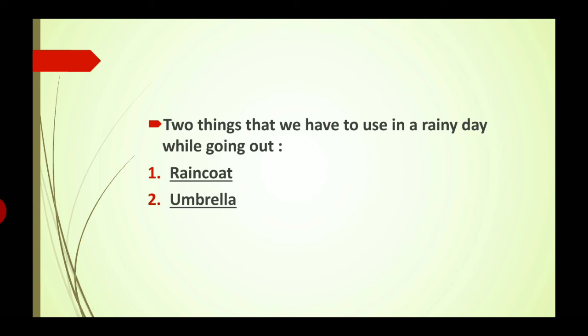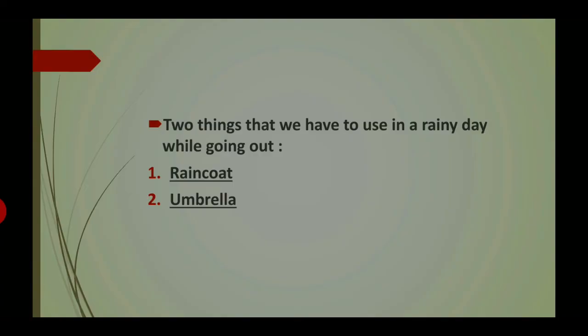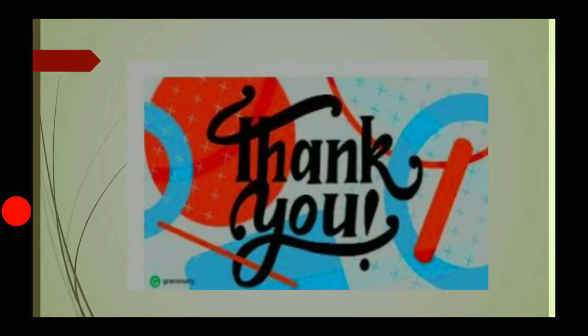Umbrella — U-M-B-R-E-L-L-A. Raincoat and umbrella — there are two things that we have to use on a rainy day while going out. When we go out in rainy weather, first thing is raincoat and second thing is umbrella.